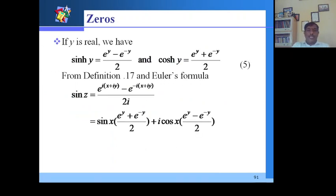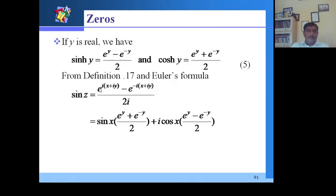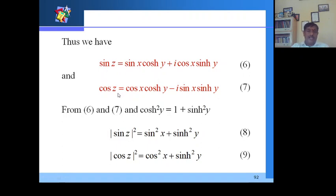Now we discuss zeros of trigonometric functions and hyperbolic functions. For real y, sinh y = (e^y - e^(-y))/2 and cosh y = (e^y + e^(-y))/2. Using these relationships, we can express sin z and cos z and verify the relationship between trigonometric and hyperbolic functions.